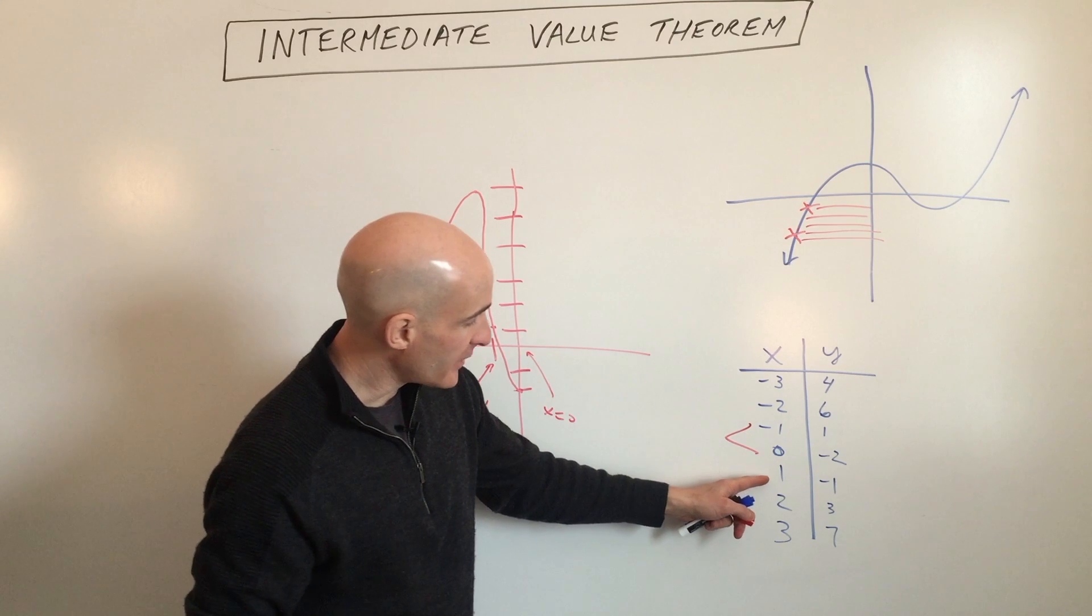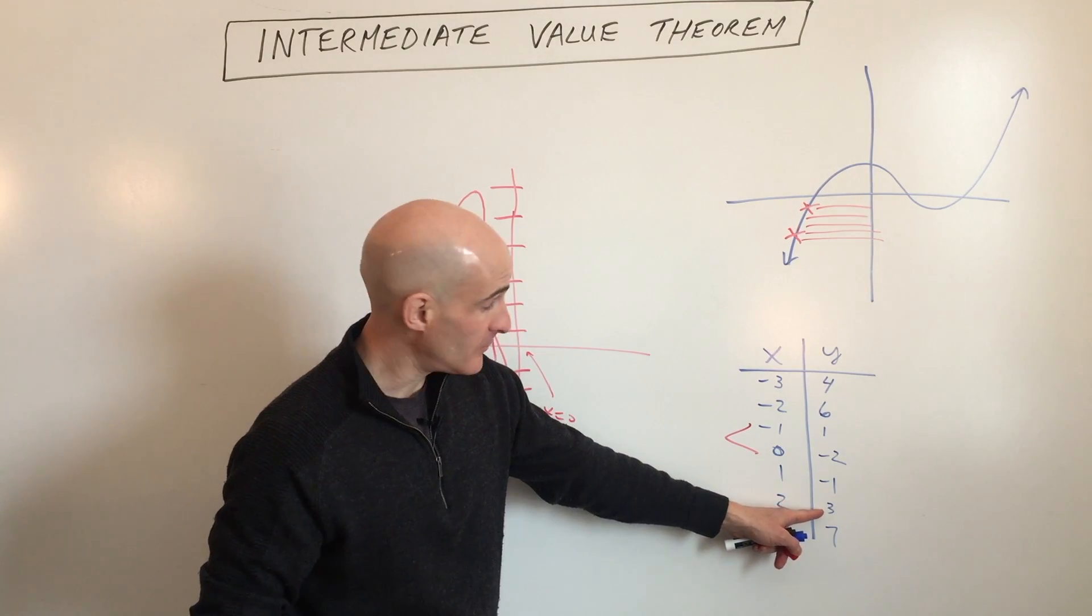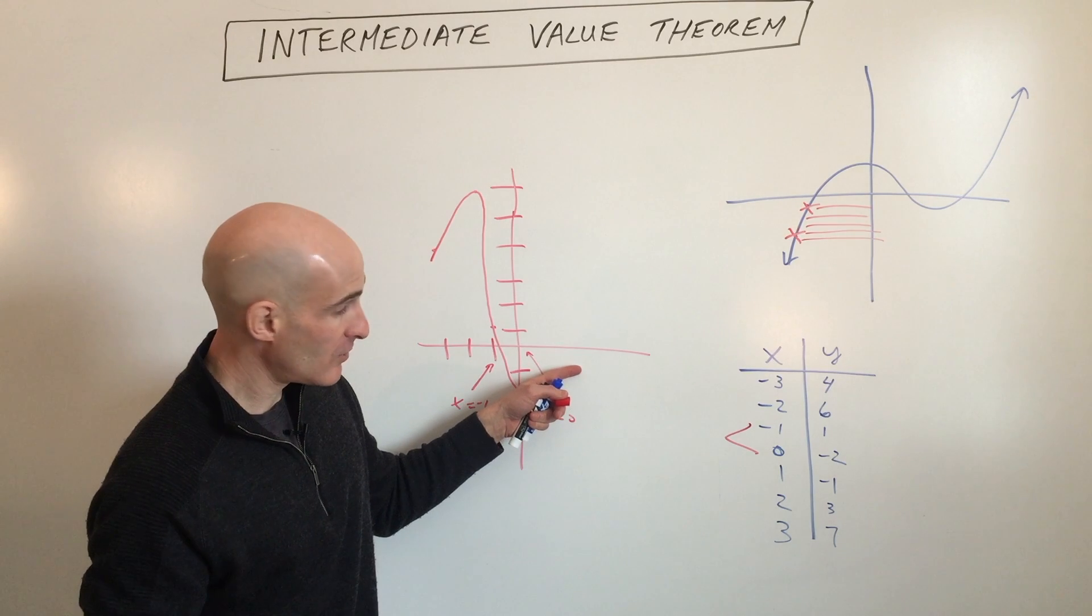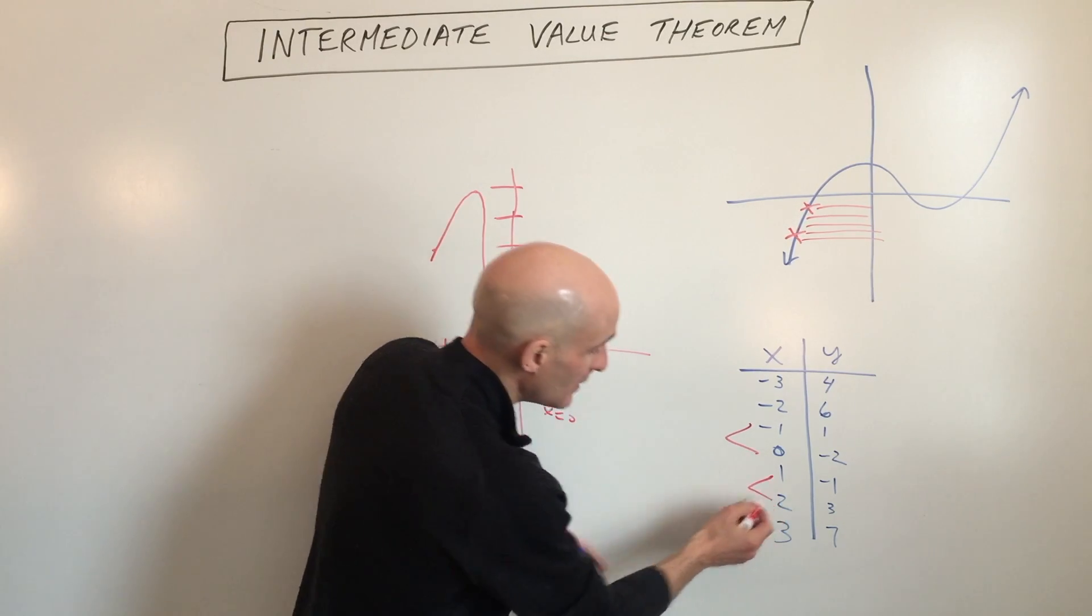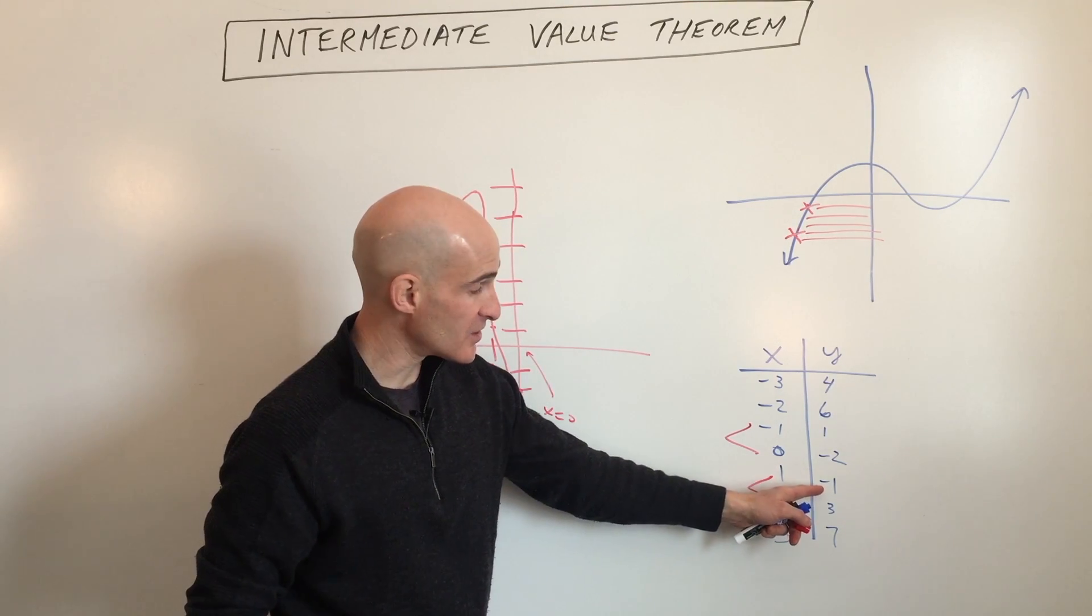If we continue along here, we go negative, positive. Again, we're going from a negative Y value to a positive Y value, so in between one and two, there must also be a zero.